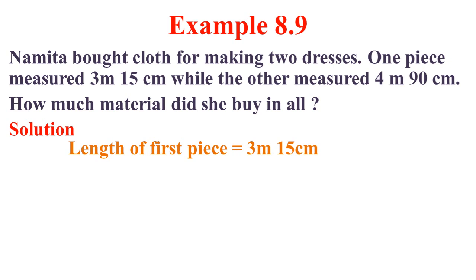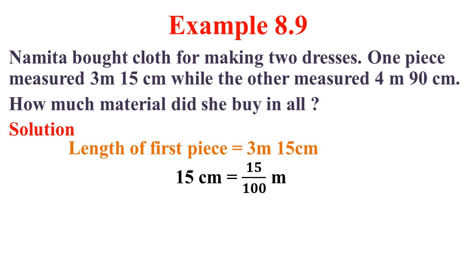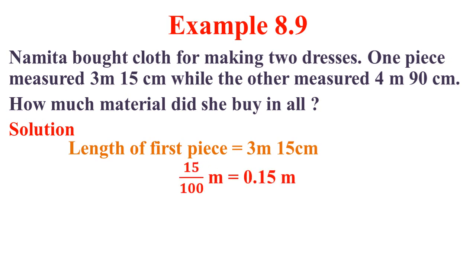The biggest unit is meter. So 1 centimeter equals 1 by 100 meter. Now we want to find 15 centimeter: 15 divided by 100 meter. Writing as a decimal, 15 divided by 100 means 0.15. Now add with 3 meter to get 3.15 meter.